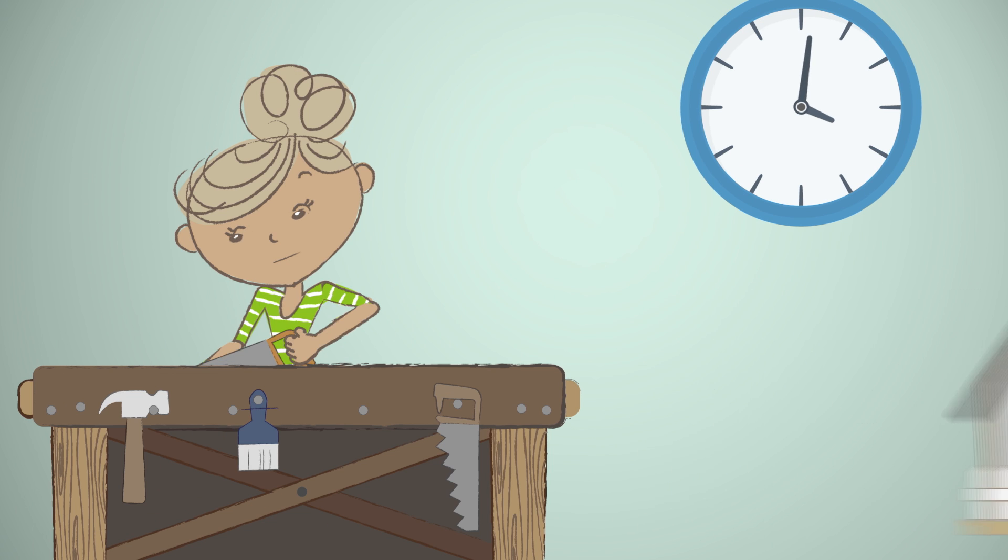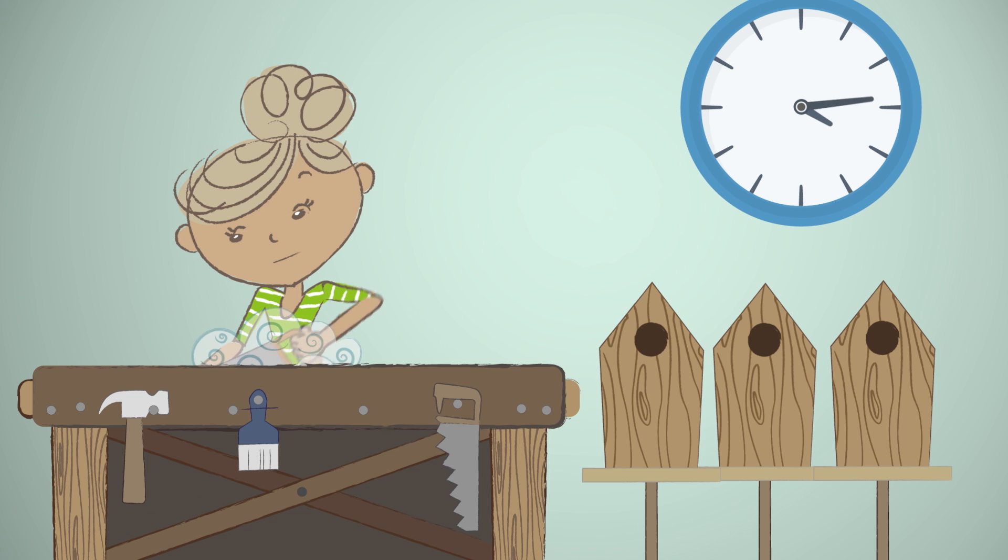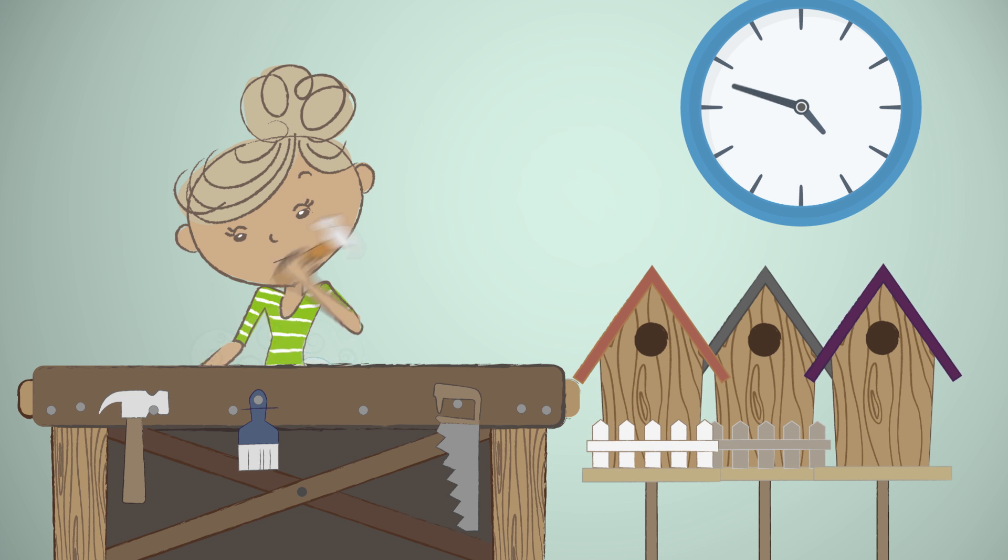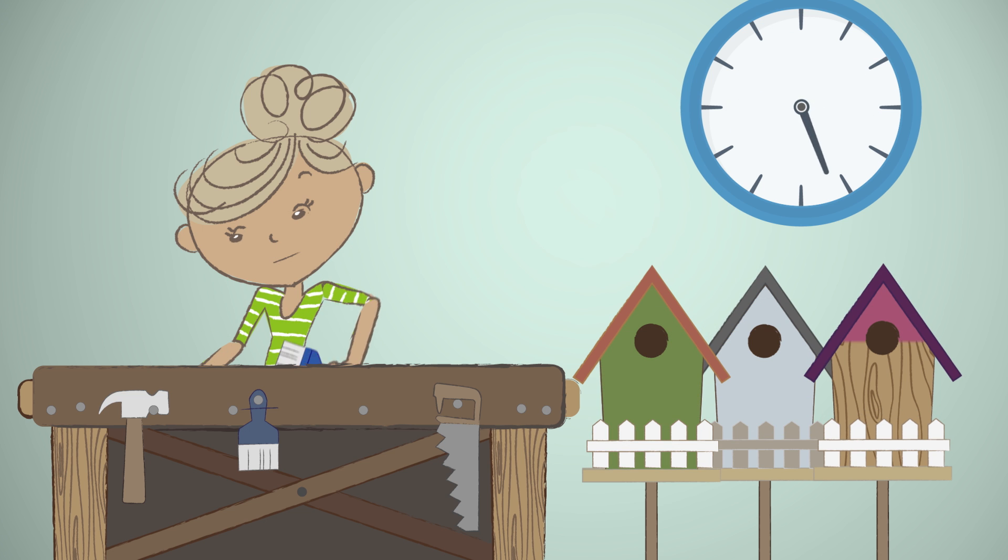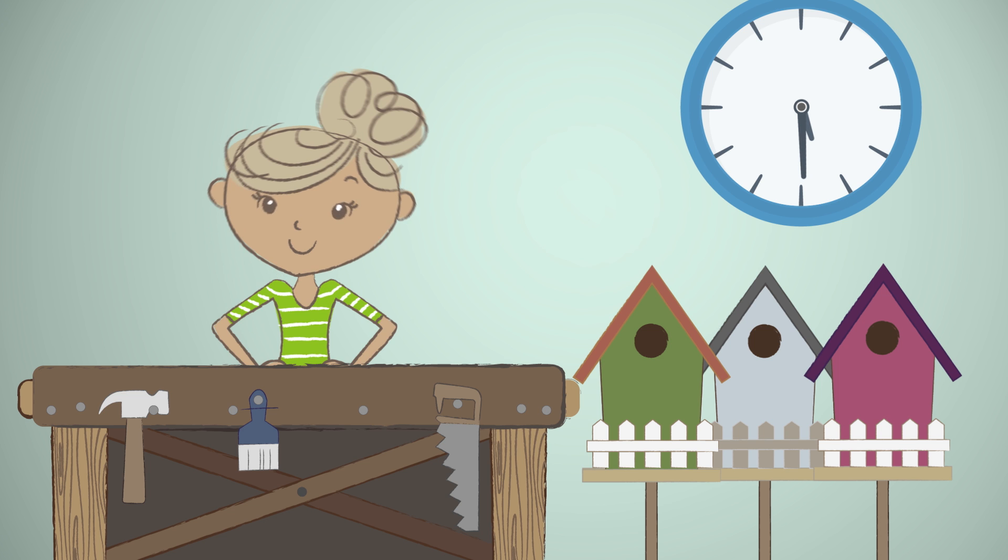Beth could decide that she wants to stop working after she makes three birdhouses. If she produces the same output as before with fewer inputs, such as working fewer hours, then her productivity still increases.